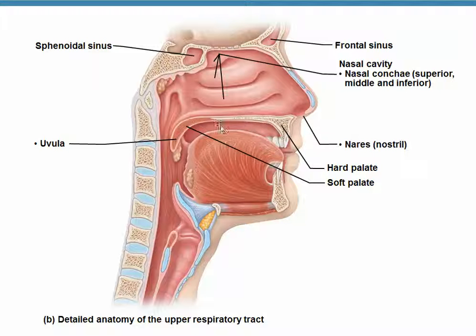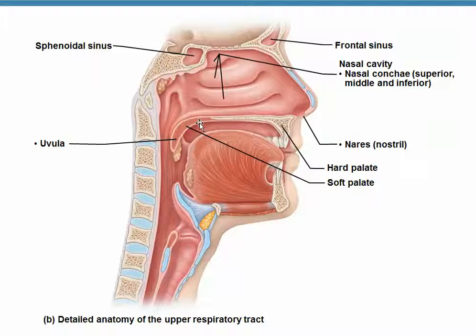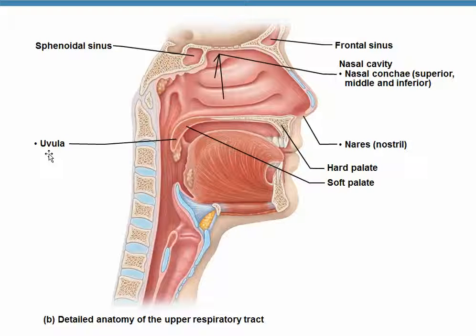Notice that the oral cavity is separated from the nasal cavity by the hard palate, which is composed of bone. Posterior to the hard palate is the soft palate, which is composed of glandular and muscular tissue. The portion of the soft palate that hangs down the middle of the throat is called the uvula.